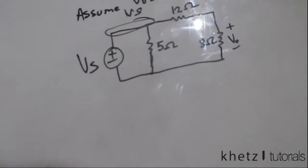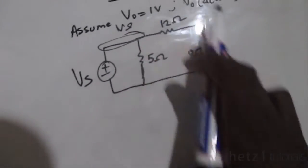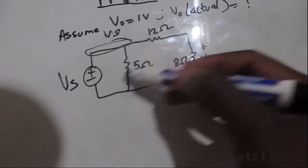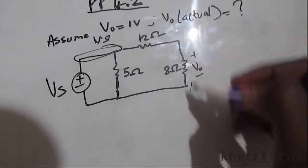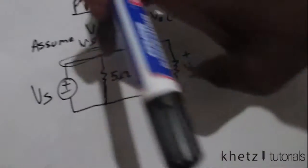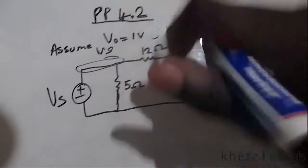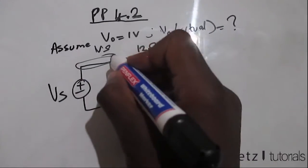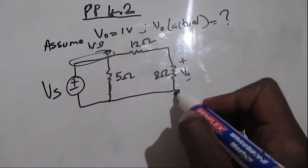We can redraw this. This is parallel to the series combination of those two, which means across these two, from that point to that point, we also have vs. So all the way from there to there we have vs.